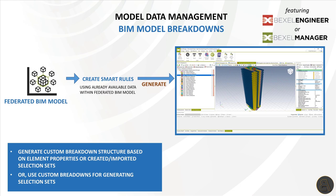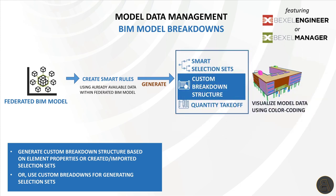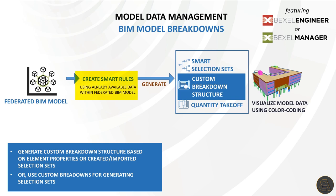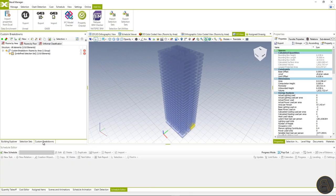Now I will show you how to generate a custom breakdown structure based on element properties. It is important to mention that you can also use selection sets for custom breakdown creation and be even more flexible while creating desired visual and data model analytics. Here the usage of templates is less important since it's a very simple workflow for creating various custom breakdowns. After creating a federated BIM model, you can use existing properties as rules for generating breakdown structure and instantly get results. Also, it is possible to use the creation wizard to automatically create selection sets from custom breakdowns. At the end, visualize breakdowns by using color-coding options.